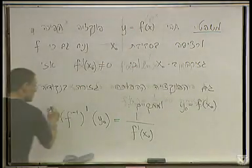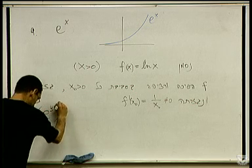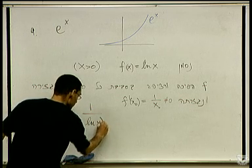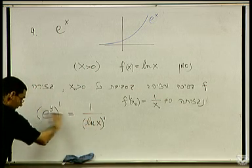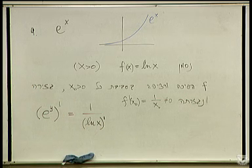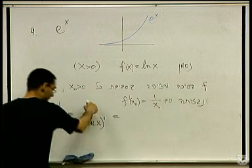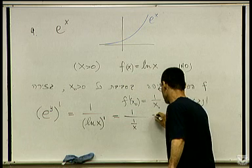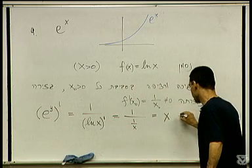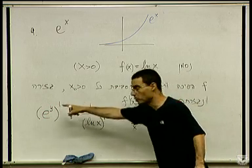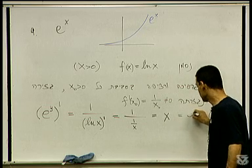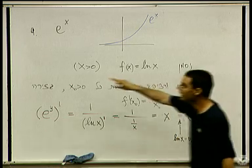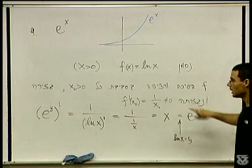אז מה זה (e^y)' לפי הנוסחה? זה 1 חלקי (ln(x))' כאשר y = ln(x). מה זה (ln(x))'? זה 1/x. אז זה 1 חלקי (1/x) = x. אבל מה זה ה-x הזה? y = ln(x) אז x = e^y. לכן (e^y)' = e^y - פונקציה אדישה לנגזרות.